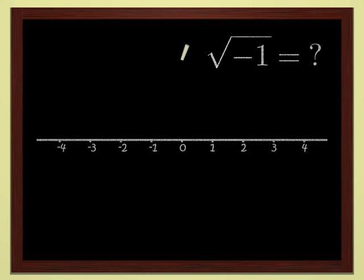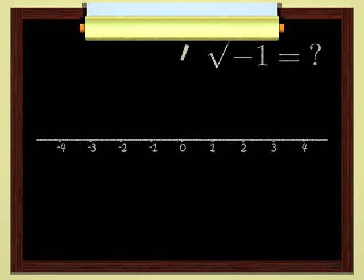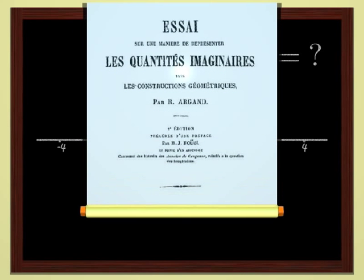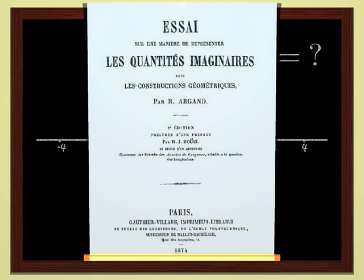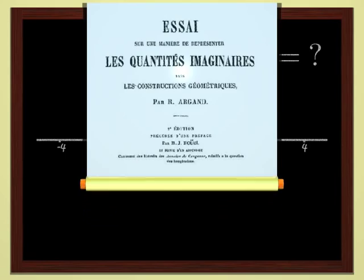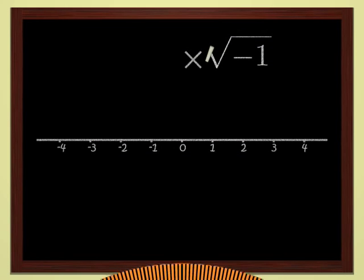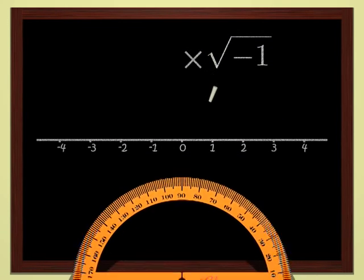But of course, we are underestimating the inventiveness of mathematicians. At the beginning of the 19th century, Robert Argon had a really great idea. He said to himself, since multiplying by minus one is a 180 degree rotation, its square root is a rotation by one half of 180 degrees, 90 degrees.